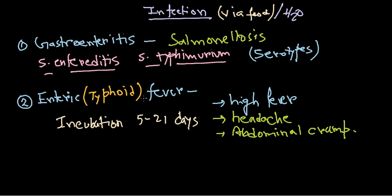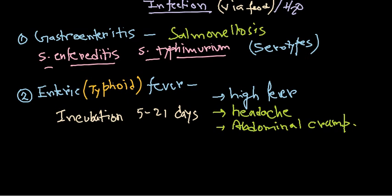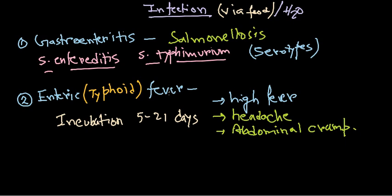In both gastroenteritis and enteric fever, Salmonella uses antigenic mechanisms for pathogenesis. They use their flagella and their outer membrane to adhere to host cells and cause infection. In many aspects they are similar to E. coli but differ in some ways we have already discussed.